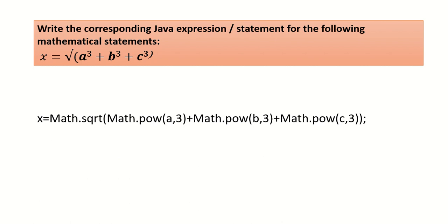The given problem is x equals square root of a cube plus b cube plus c cube. We can write double x equals Math.sqrt, then Math.pow of a comma 3 plus Math.pow of b comma 3 plus Math.pow of c comma 3.